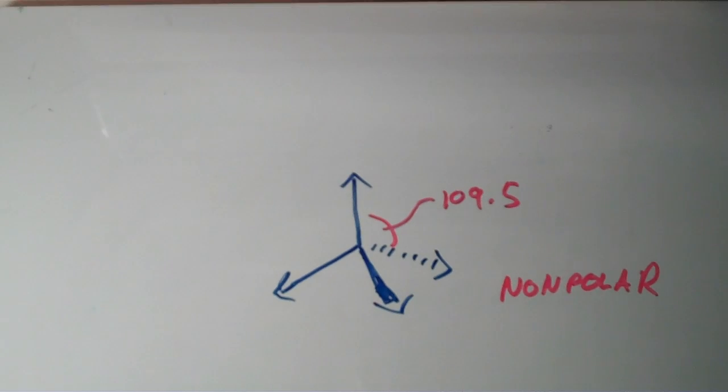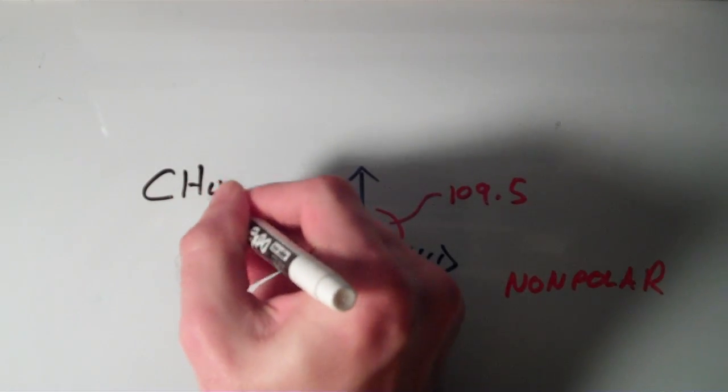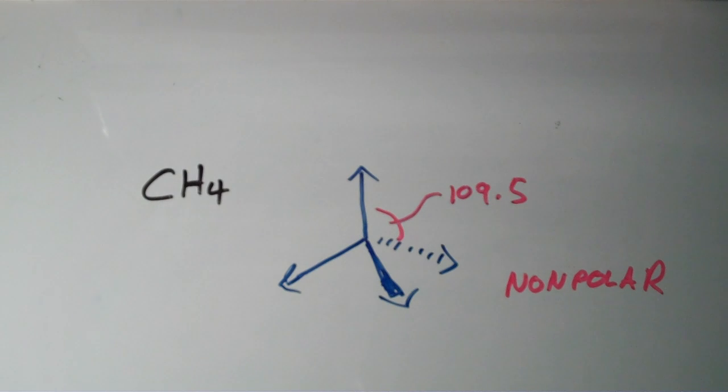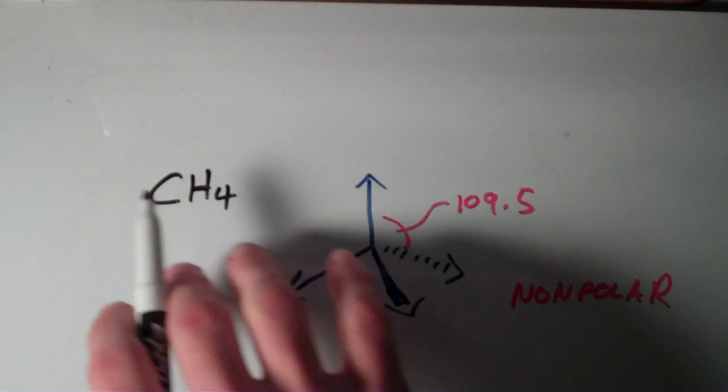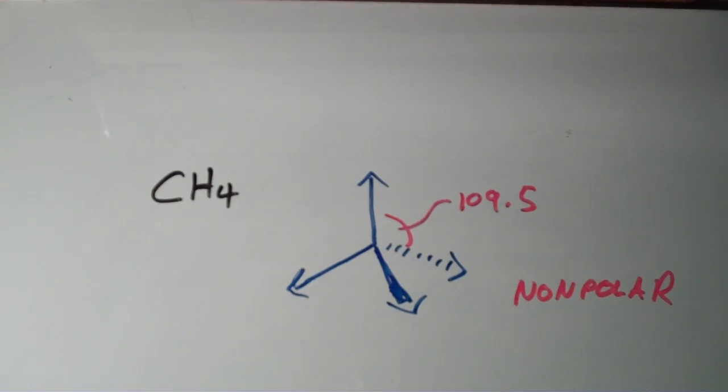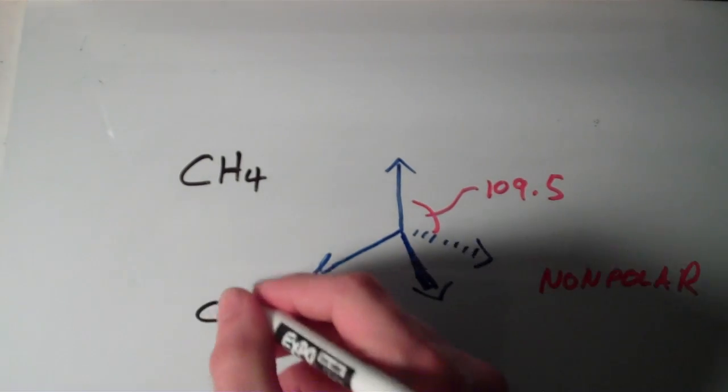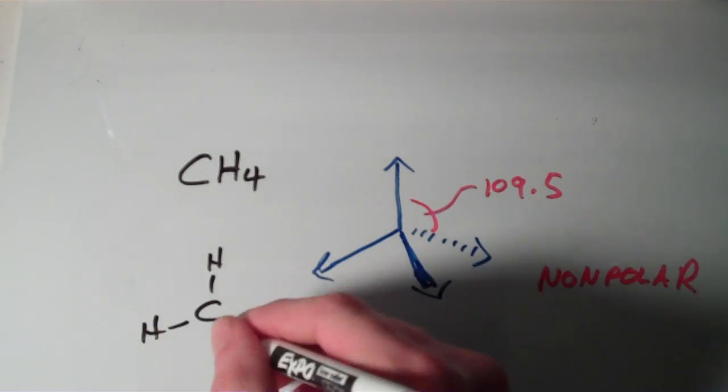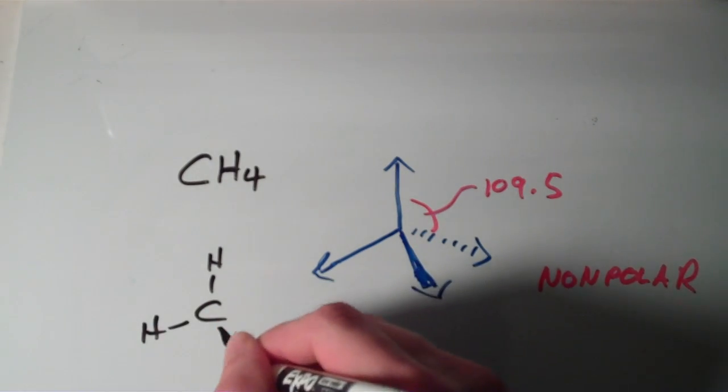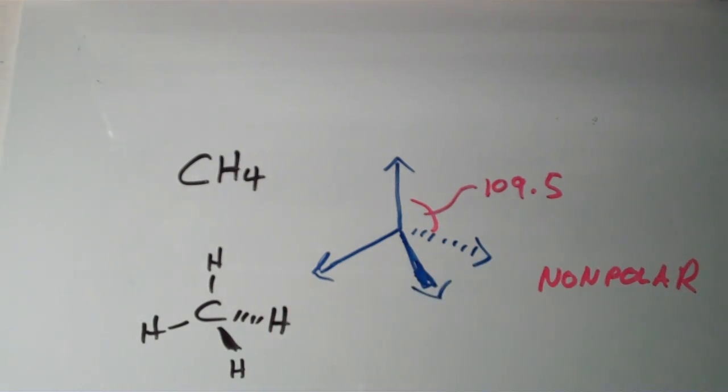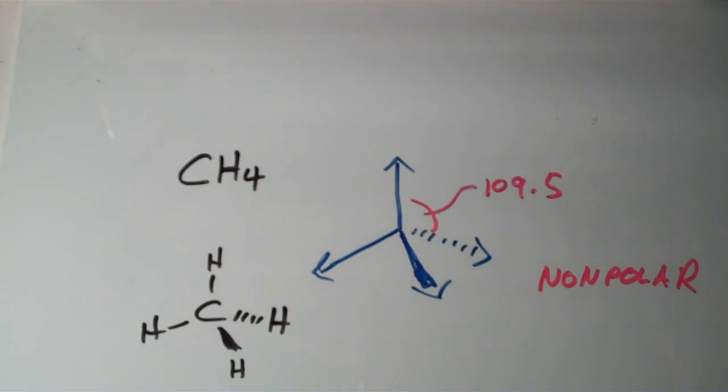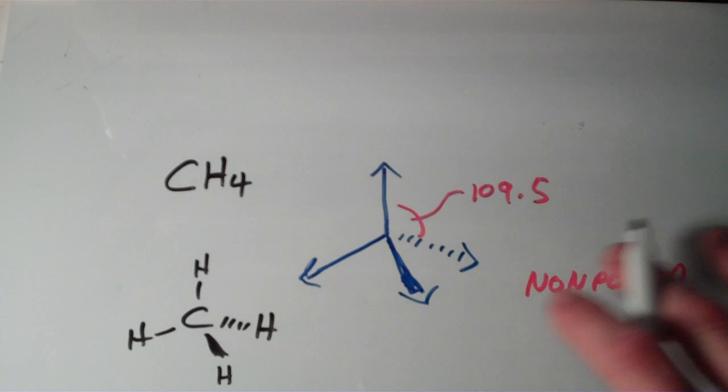And the classic example of this is methane, CH4. Methane has a central carbon surrounded by four hydrogens that form a tetrahedron. And it turns out, if you were to do the math and add those vectors together, then they would definitely sum up to zero. So methane is nonpolar.